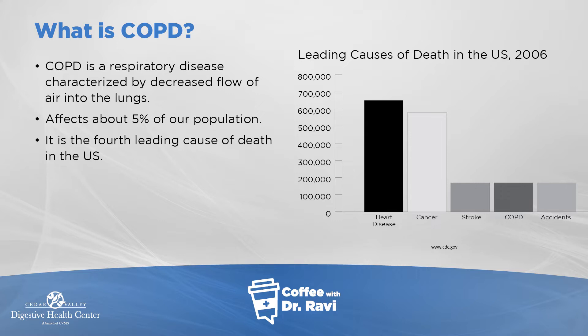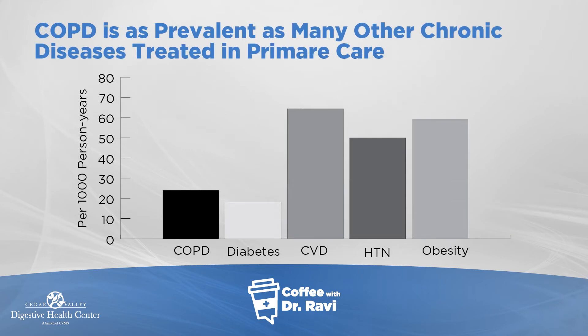The common causes of death include heart disease, cancer, stroke, followed by COPD. So it's up there and it's as prevalent as many other common diseases in primary care including diabetes, hypertension, obesity, etc.